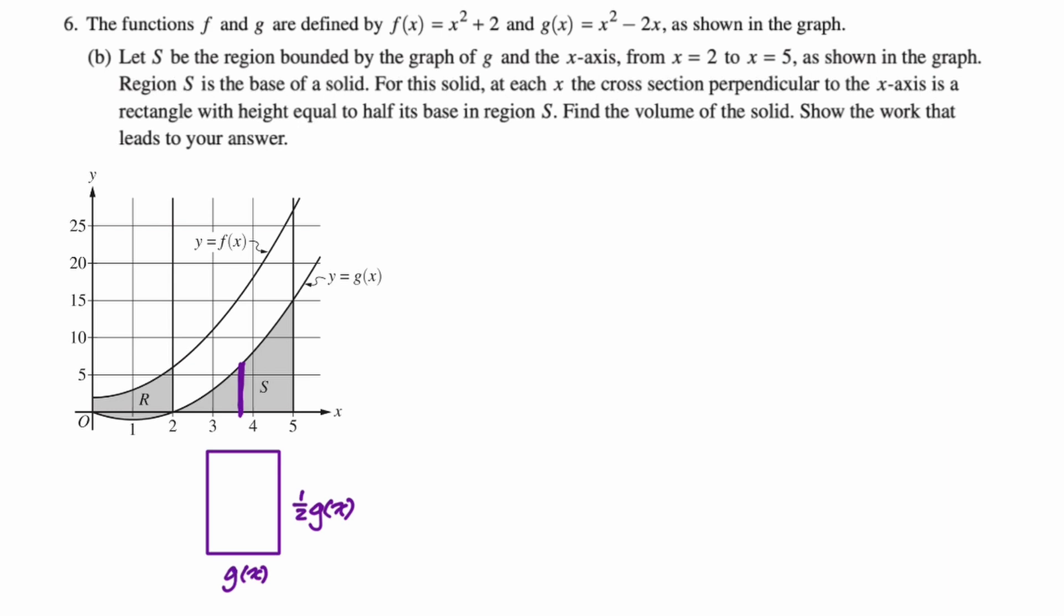It's not just set up but do not evaluate. So we're going from two to five, integral of the area of a cross section. The area of a cross section is just base times height. So it's going to be one half g(x) times g(x), which is one half g(x)² dx. If it was set up but do not evaluate we'd be done, but we are not done. We need to actually do this thing.